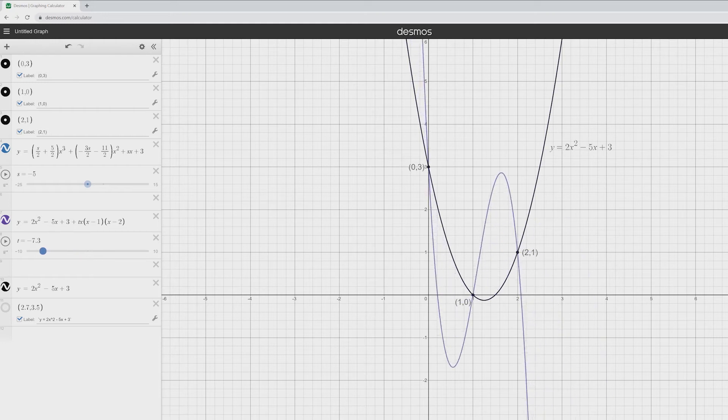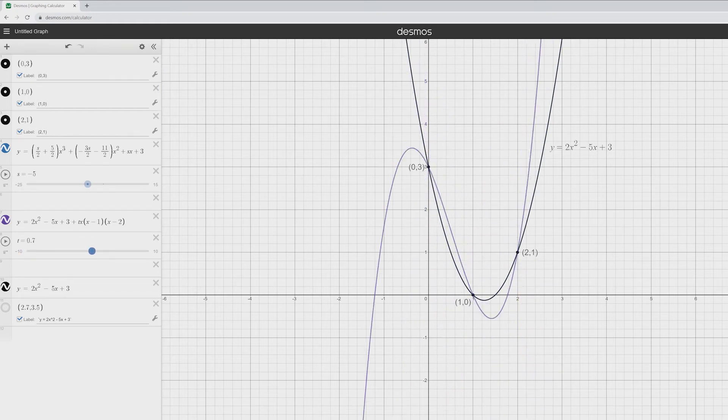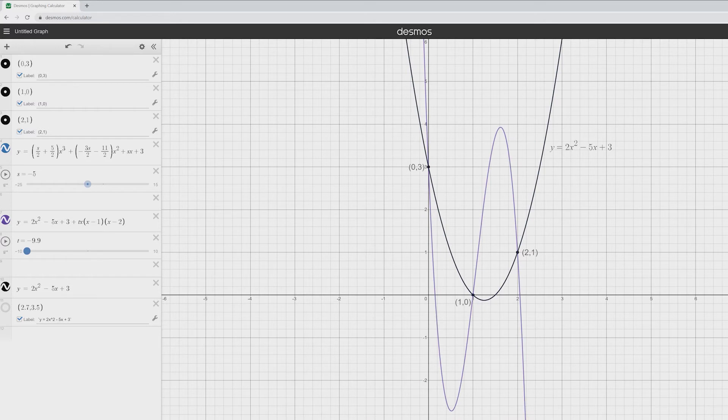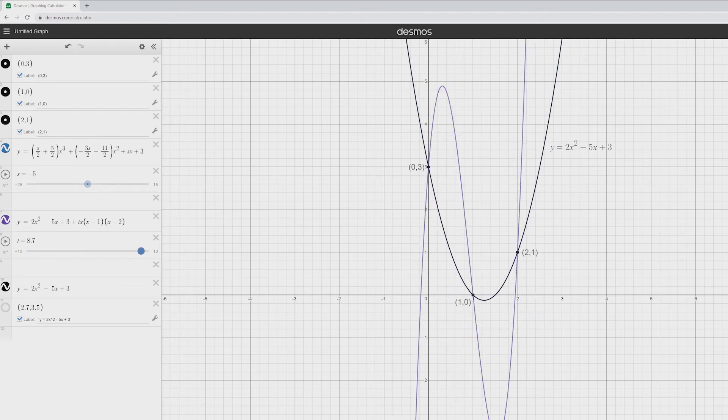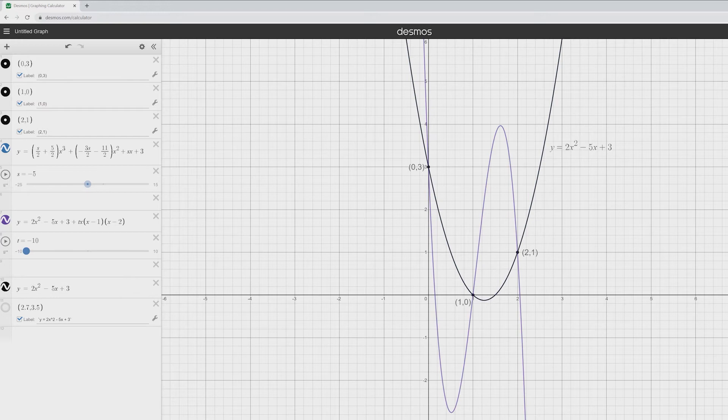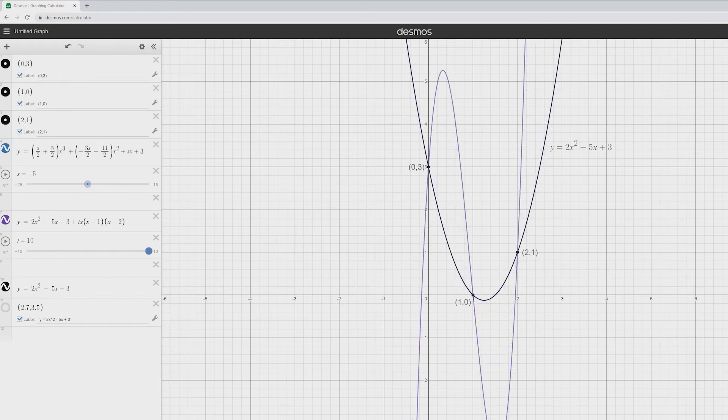Instead we could be thinking about this t value varying, and when the t value varies the exact same thing happens. So here the t value, instead of ranging between -25 and positive 15 like the s was, the t value is just going between -10 and positive 10. And it goes to the exact same set of graphs. And right in the middle at t equals zero, we get the actual quadratic.